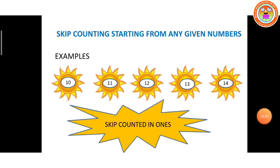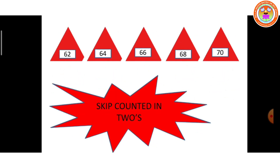Skip counting starting from any given number. 10, 11, 12, 13, 14 — skip counted in 1s. 62, 64, 66, 68, 70 — skip counted in 2s.